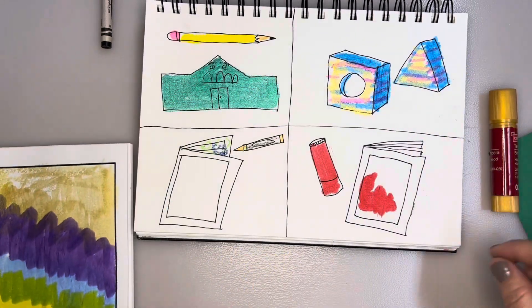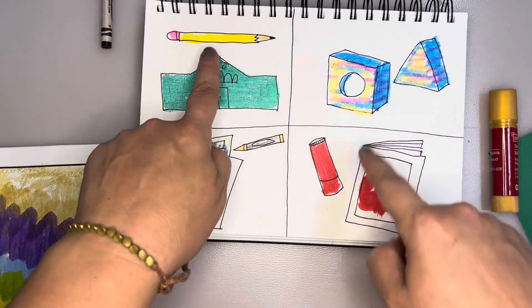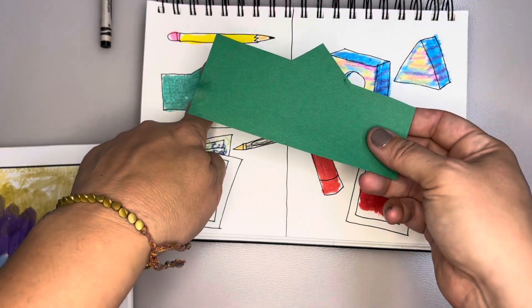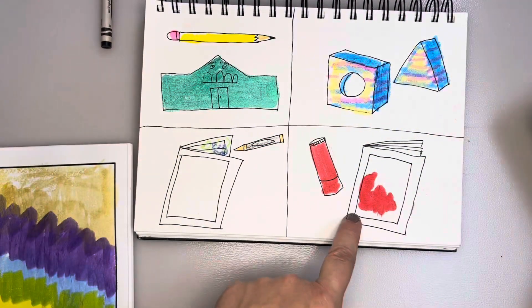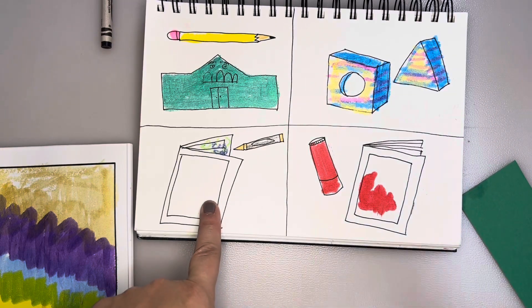So four choices: blocks, drawing on cut paper with pencil, using a paint stick, or coloring with crayons.